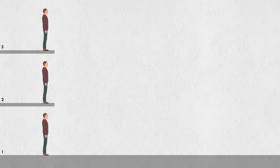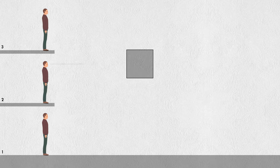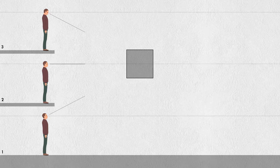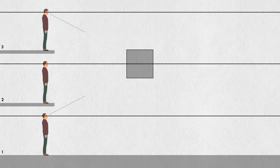Now let's view these guys on a side view. They are all looking directly forward, but let's say that there is a floating cube in front of them. It's directly in front of number two, but number one and three will tilt their head to look towards it. Does this change their eye level? No, it only changes their line of sight. Their eye level still remains the same because they are at the same level.